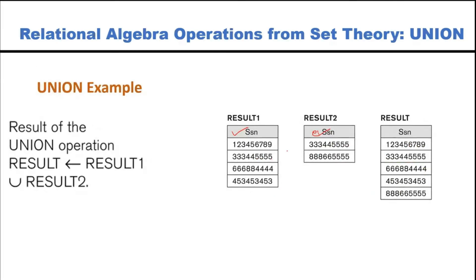The result of union is: take all the elements from R and from S, and eliminate duplications. So elements like one, eight, nine, five, five, four, four, and five, three are taken. When we come to the second relation, some entries are repeating — for example, double five, double five, and triple three, double four — these are exactly the same, so we do not take them again. Only new entries are included. The union result has five tuples in the resultant table.